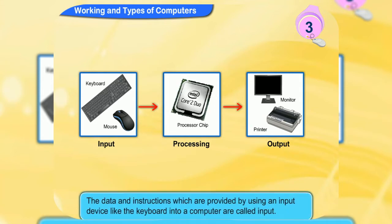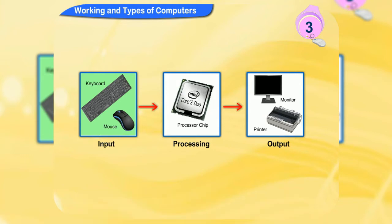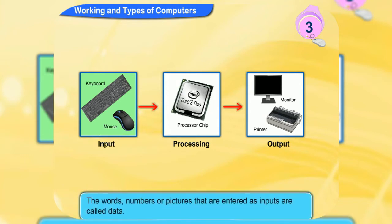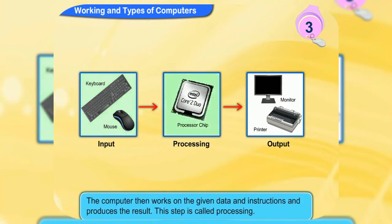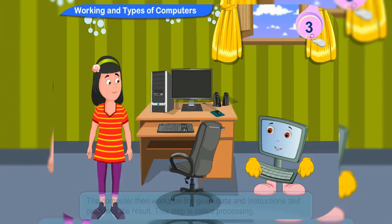The data and instructions which we provide by using an input device like the keyboard into a computer are called input. The words, numbers, or pictures that we enter as inputs are called data. The computer then works on the given data and instructions and produces the result. This step is called processing.